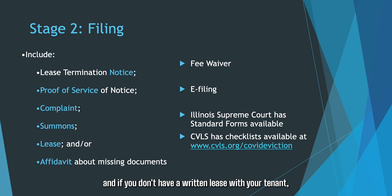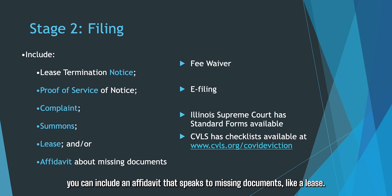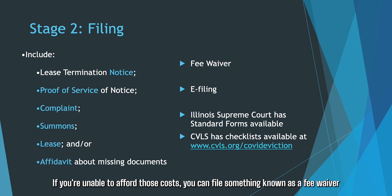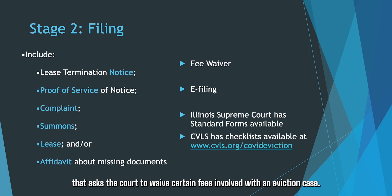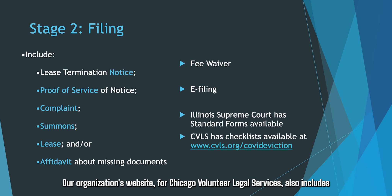You'll also want to include a lease. If you don't have a written lease with your tenant, you can include an affidavit that speaks to missing documents like a lease. There are certain fees for filing a case in Cook County; if you're unable to afford those costs, you can file a fee waiver that asks the court to waive certain fees. Most filing in Cook County is now done online through a website known as Odyssey — a process known as e-filing. If you're unable to file online, you can file an exemption to ask the court to allow you to file in person at the courthouse. Our organization's website for Chicago Volunteer Legal Services also includes a checklist and links to forms relevant for particular cases.